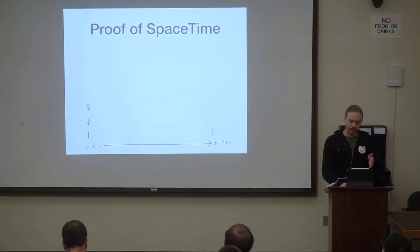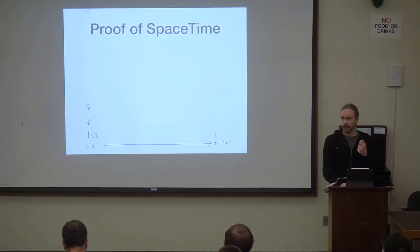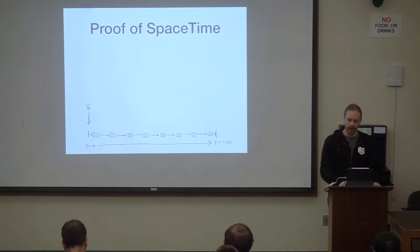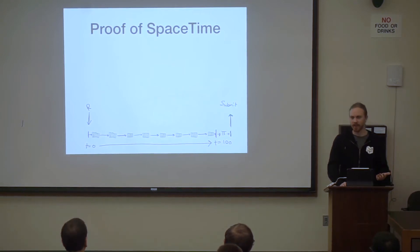So the way this briefly works is you have some time period, you have some input challenge, and then the prover takes that challenge, does some Merkle proofs on their entire storage, then takes the output of that into a VDF, slows them down, does some more challenges, another VDF, another VDF, you get it. Keep doing that, and at the end, you gather all this together, and you have to compute a proof. You know, we snark it up. And then you submit that to the chain.